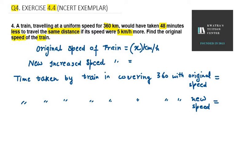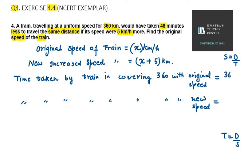Let the speed of the train be x kilometers per hour. Since the speed has been increased, the new speed will be x plus 5 kilometers per hour. Using the formula time equals distance over speed, when covering 360 kilometers at original speed x, time is 360 over x, and at the new speed, time is 360 over x plus 5.